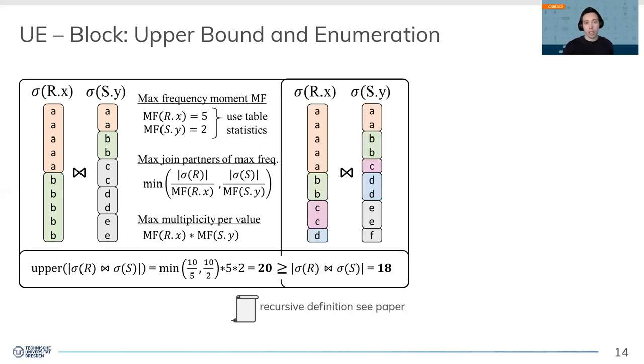However, as you can see on the right-hand side where we give an example with more distinct values, this does not violate our upper bound. Things get only better. For more details, please look at our paper where you can also find the recursive definition for an arbitrary number of joins.